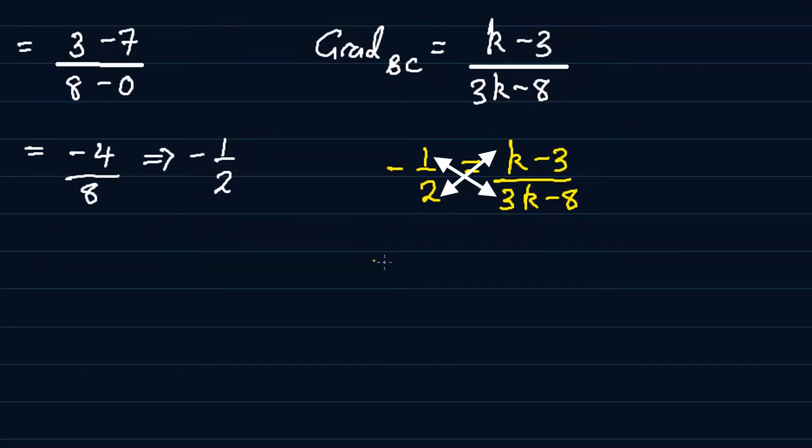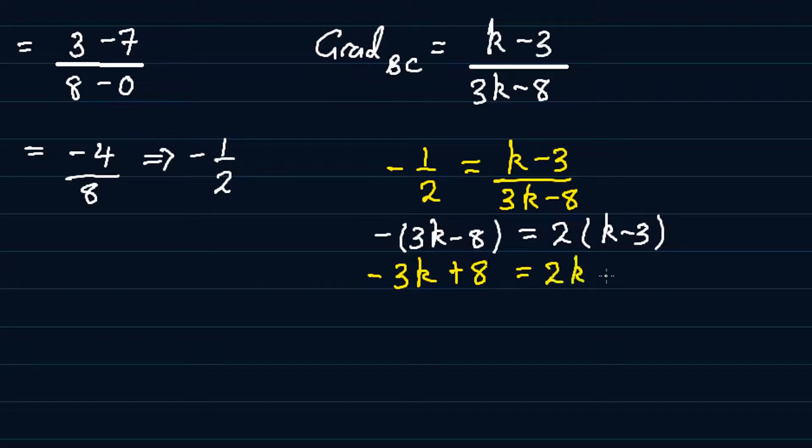So minus a half is equal to k minus 3 over 3k minus 8. If we cross multiply, we'll be having minus of 3k minus 8 is equal to 2 of k minus 3. And we are going to have minus 3k plus 8 is equal to 2k minus 6 from simplifying the brackets. Now bringing the like terms to one side, we'll be having minus 5k is equal to minus 14. Then dividing both sides by minus 5, we'll get k being equal to 14 over 5, which is the same as 2.8.